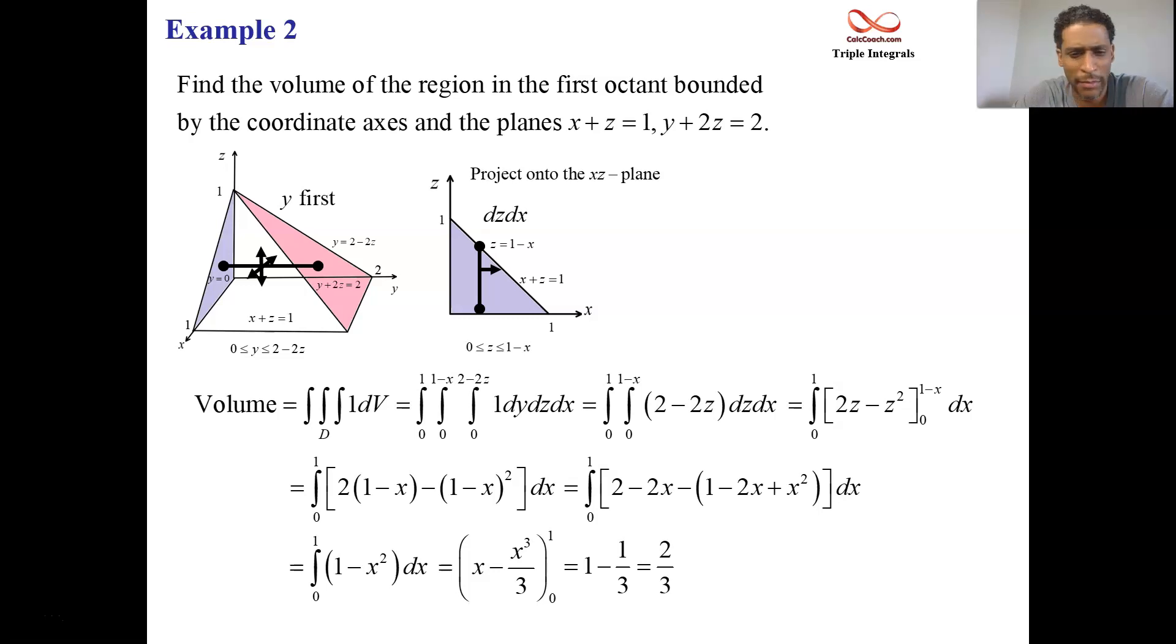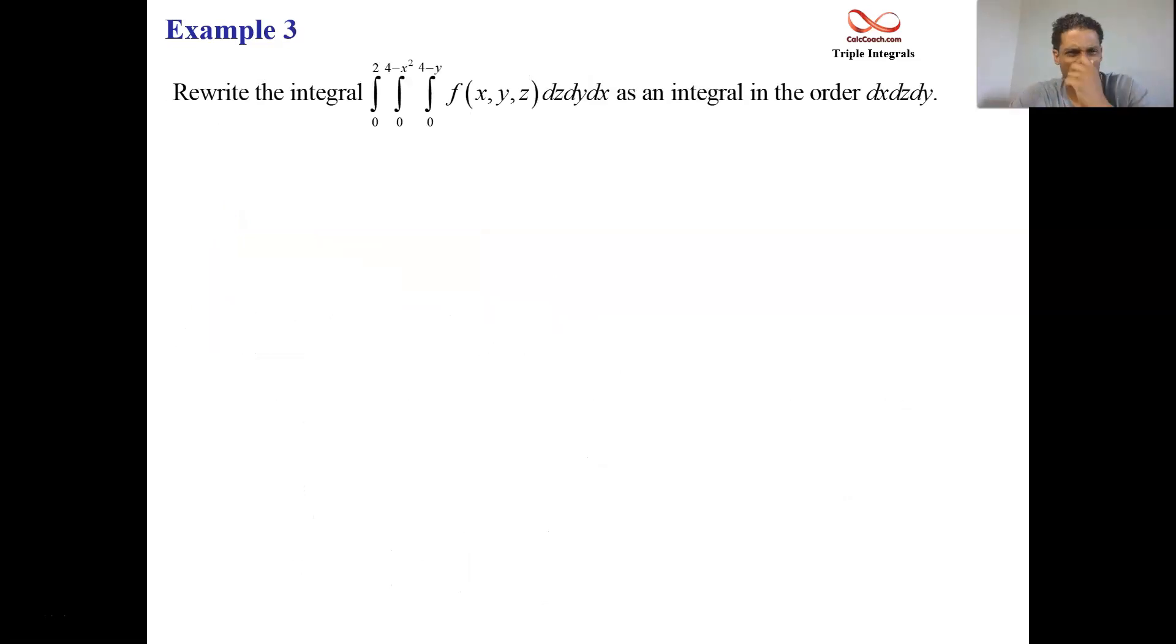Okay. We're right at 2 minutes, 10 minutes. But I want to go ahead and talk about this next one as well. So this is our third example for a Cartesian. Where you're given just a generic function on the inside. You're not actually going to do this integral. We're just going to rewrite this integral in a different order. And so z's go from 0 to 4 minus y. Y's go from 0 to 4 minus x squared. And x's go from 0 to 2.